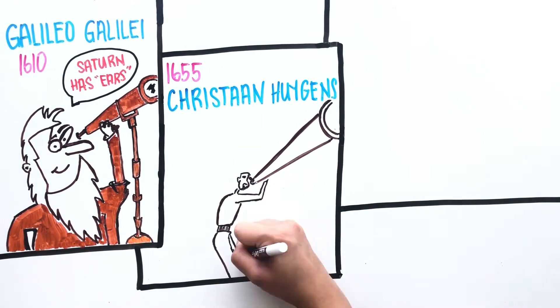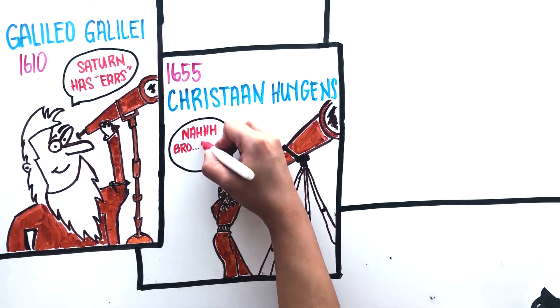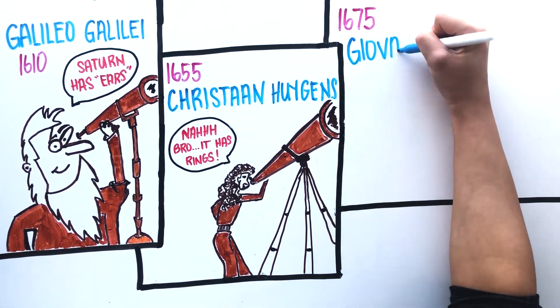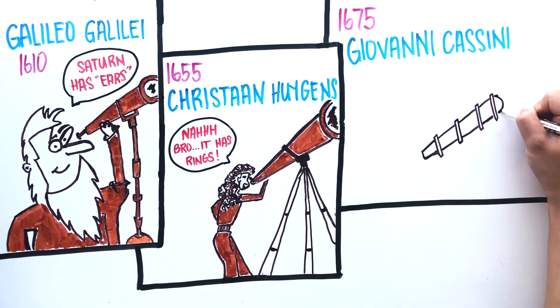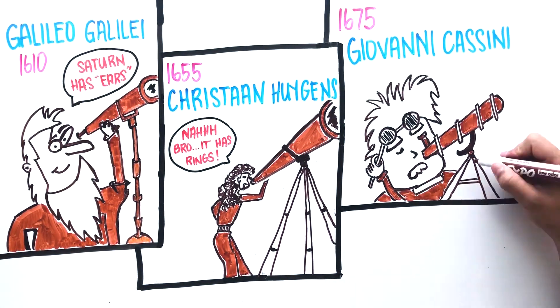Then in 1655, a Dutch astronomer named Christian Huygens looked at Saturn with a better telescope and proposed that Saturn has a thin flat ring. Twenty years later, Giovanni Cassini discovered gaps in between the rings.